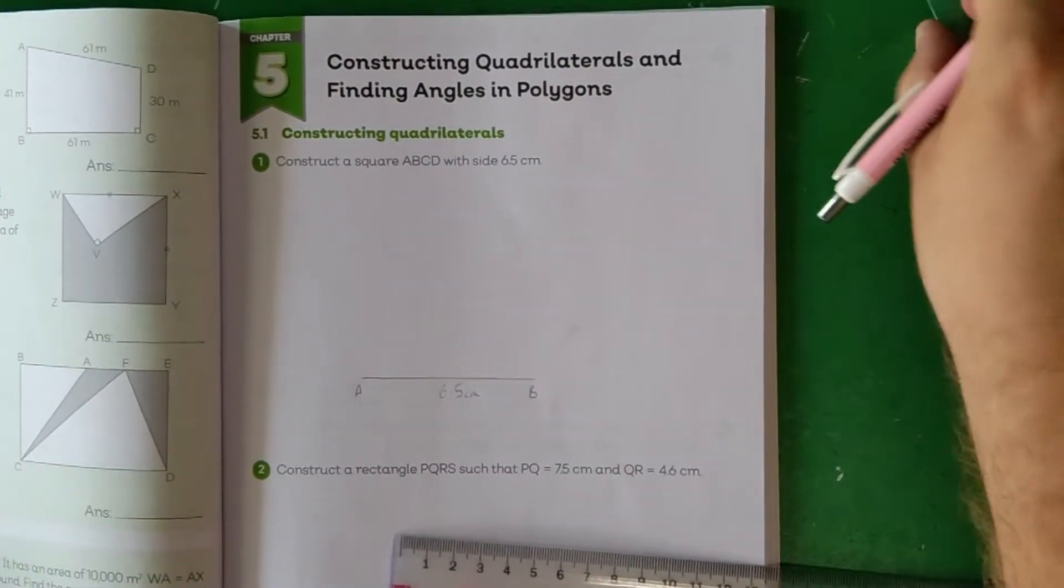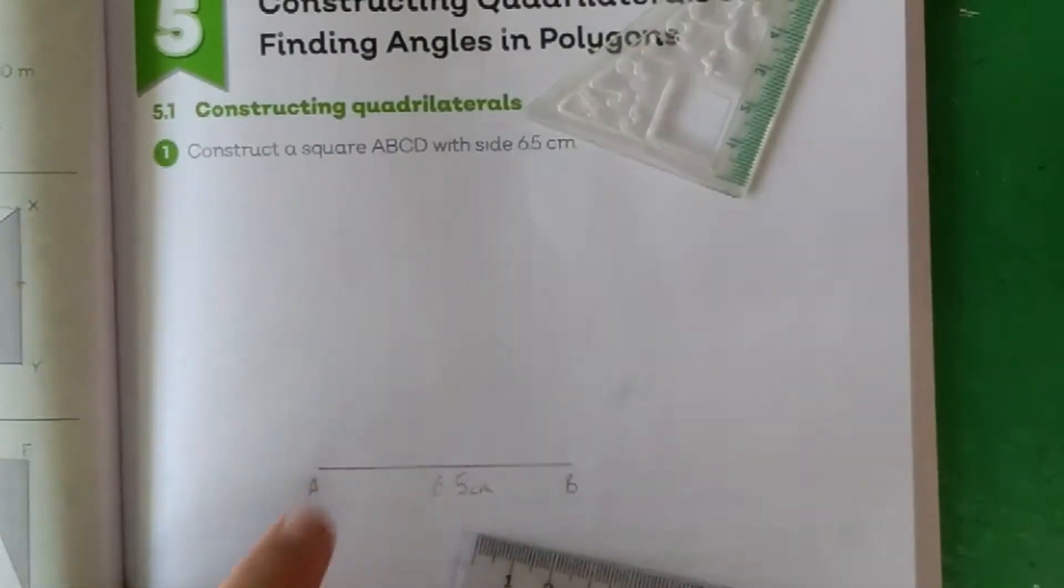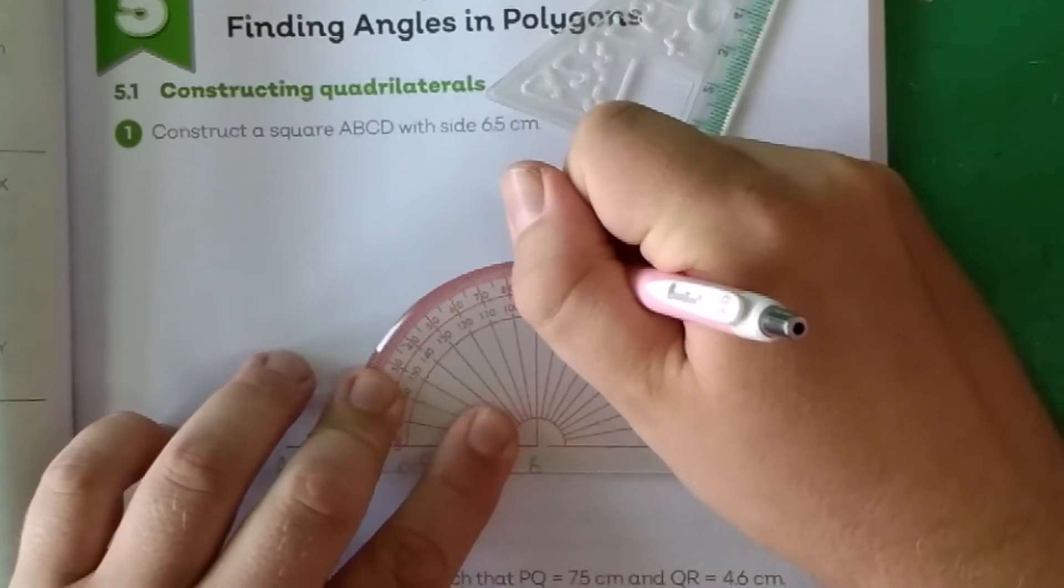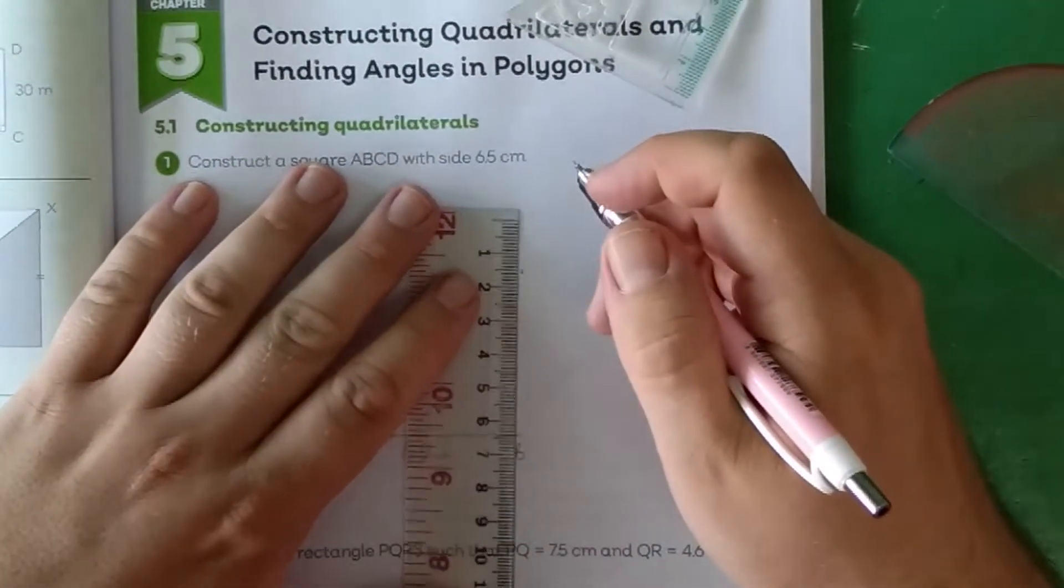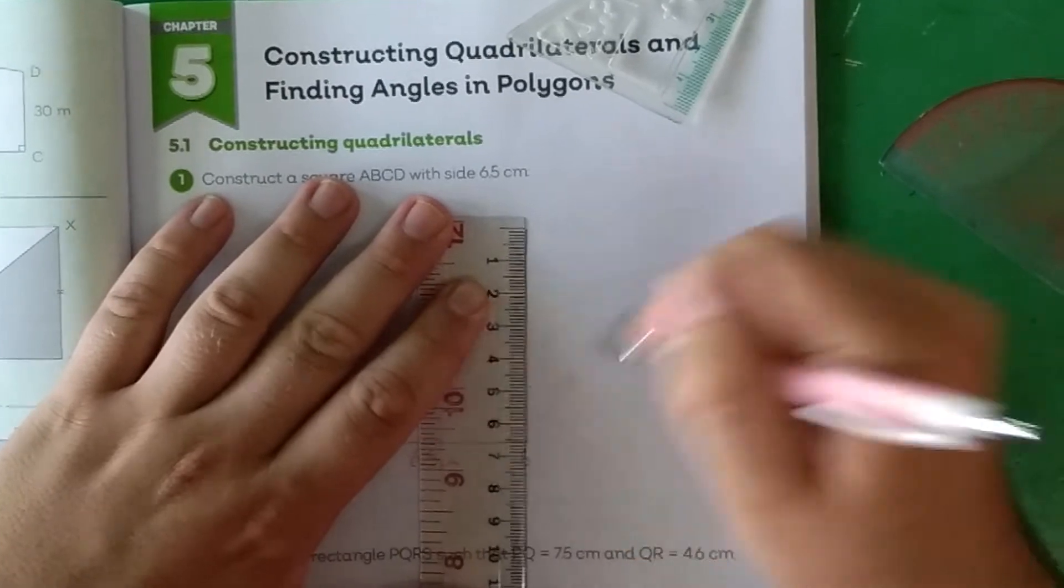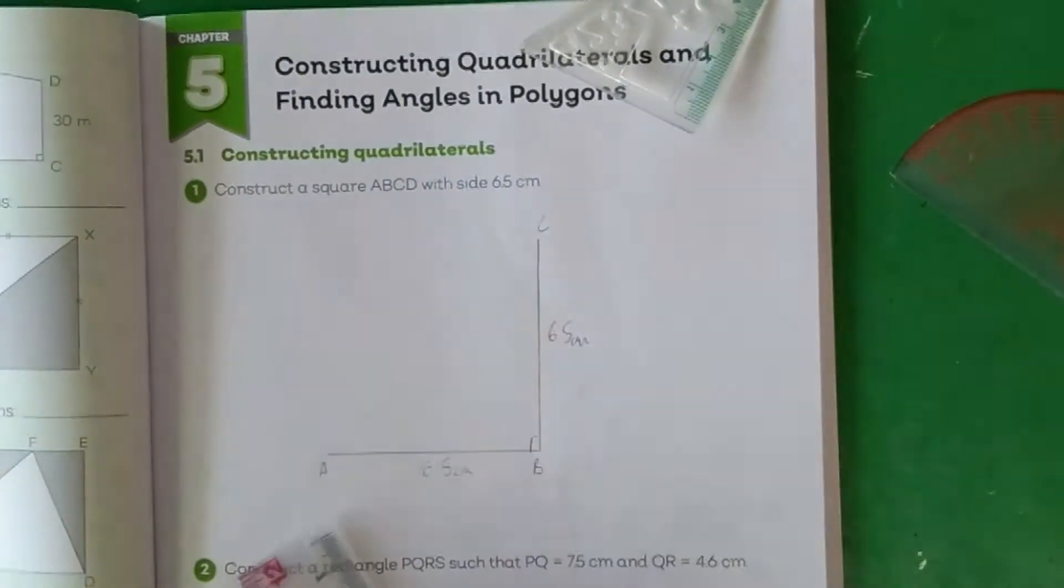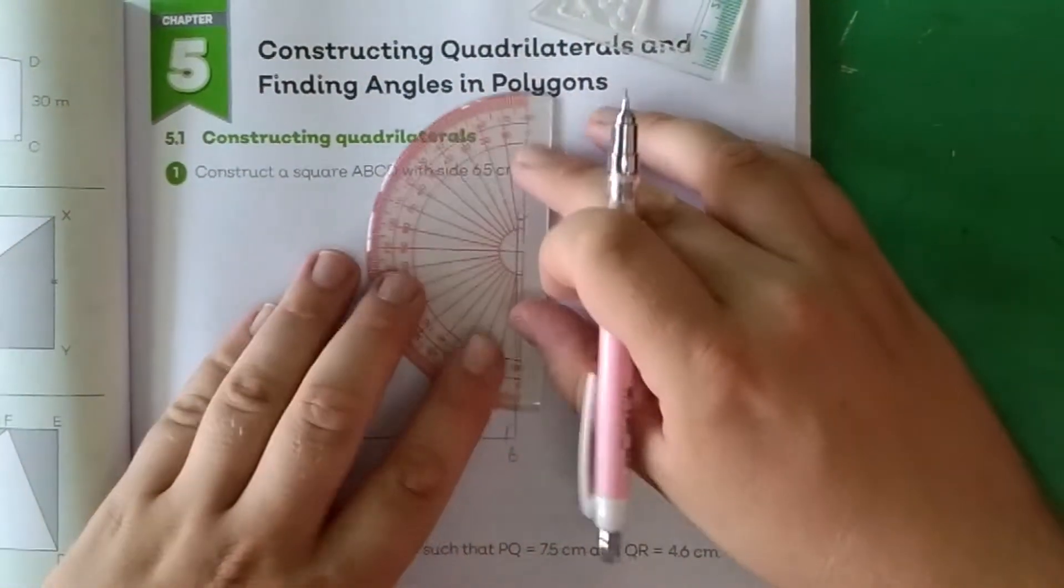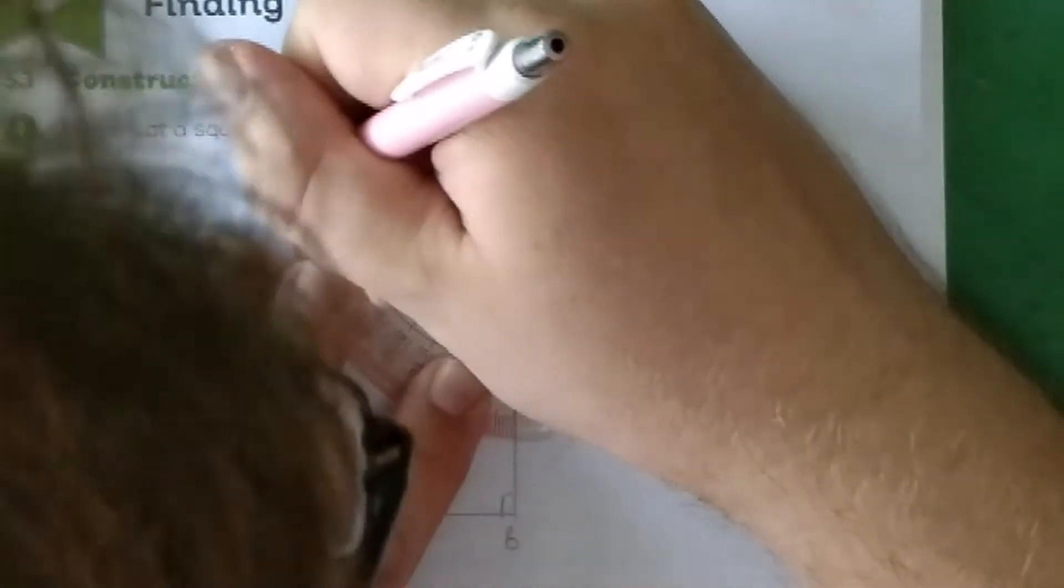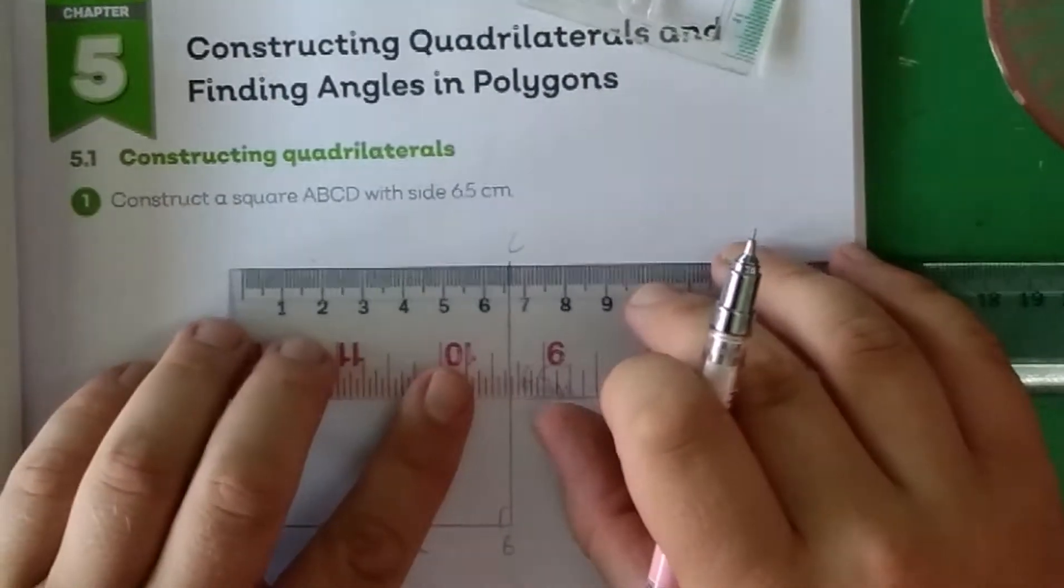Now, I've got to get my 90 degrees here, so I'm going to use my protractor and just put a dot at the 90 degree point up here. Then I'm going to measure 6.5 from point B, passing through there. I've got to remind myself to pass under the point there.